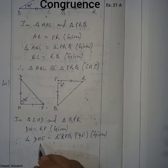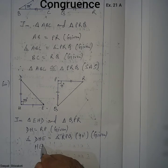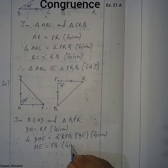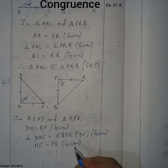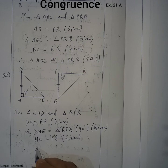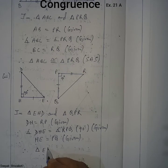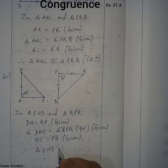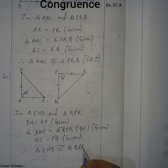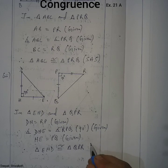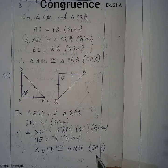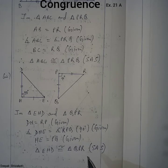Side HE is equal to PQ — also given in the figure. Therefore triangle EHD is congruent to triangle QPR by the Side-Angle-Side rule.